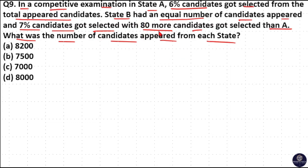Here, you don't need to do any calculation because from the question itself, you can see that 1% is 80. Then 100% is 80 into 100, 8000. So option D is your answer.